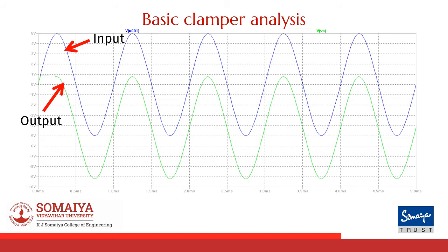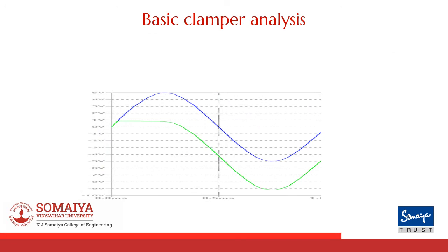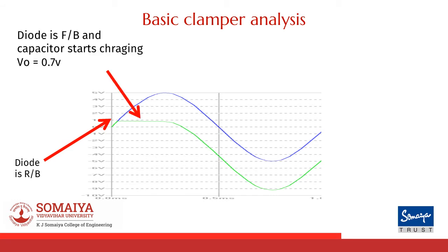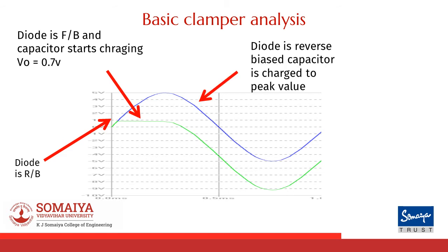These are the input and output waveforms of the circuit. Let's zoom in to get a better picture. As you can see, before VIN crosses 0.7 volts, the diode becomes reverse biased and the output follows the input. After VIN becomes greater than 0.7 volts, the diode is forward biased and the output becomes equal to the drop across the diode, which is 0.7 volts. After VIN crosses the first peak and becomes less than 5 volts, the diode becomes reverse biased and the capacitor has by now charged to the peak value.